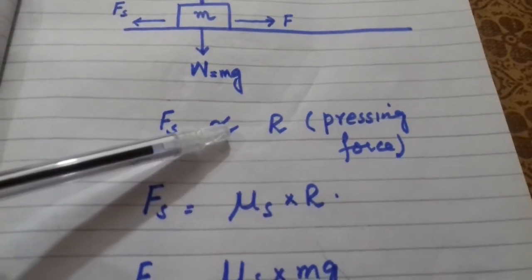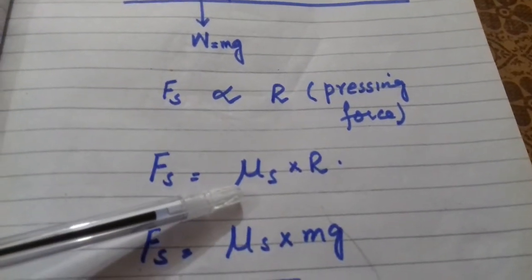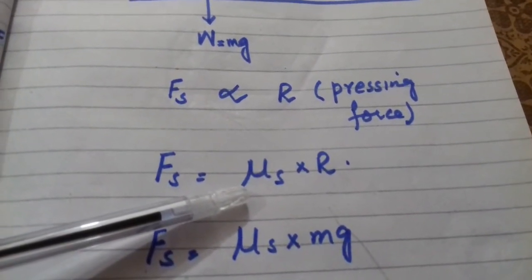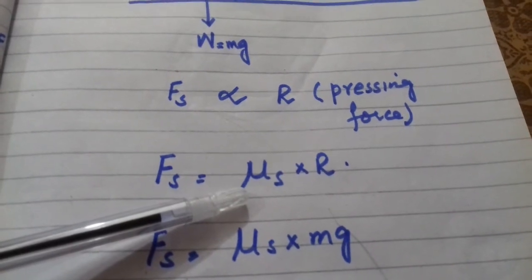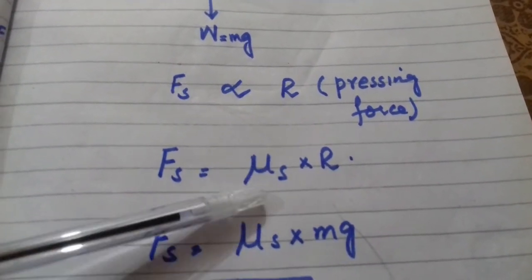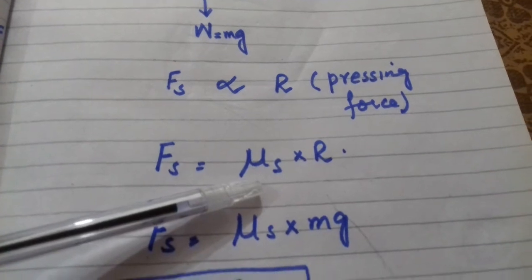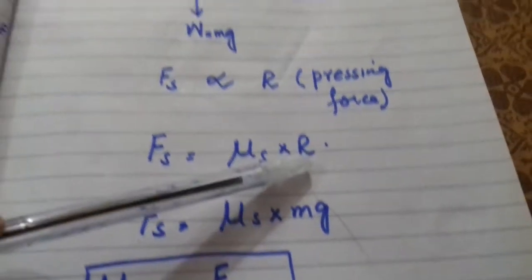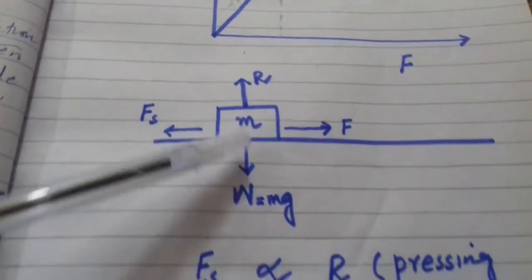When we replace the proportionality sign, we introduce a constant of proportionality μs, called the coefficient of static friction. The reaction is equal to the weight of the body.